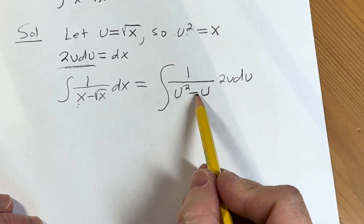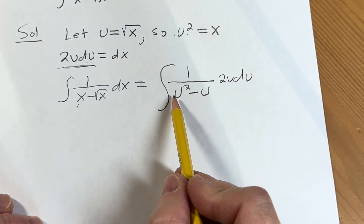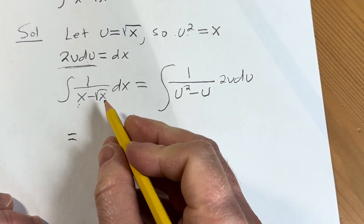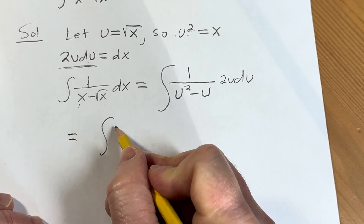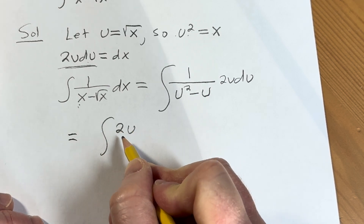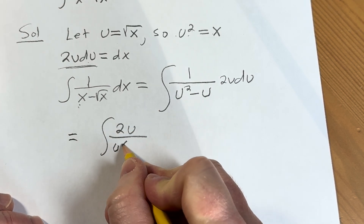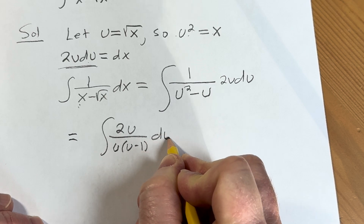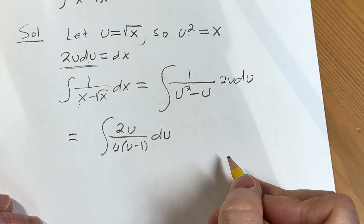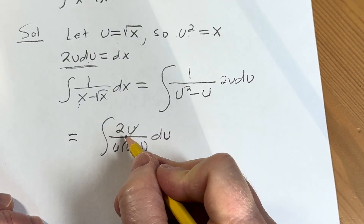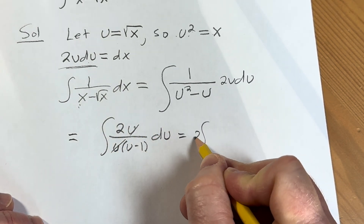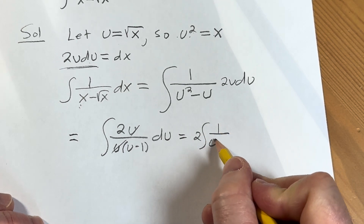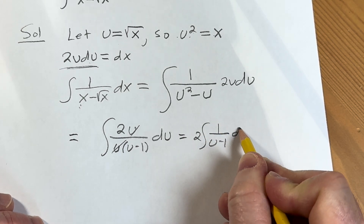Now you can see that we can factor out a u from the denominator, so this will be equal to the integral of 2u over u times (u minus 1) du. We cancel the u, so this is equal to 2 times the integral of 1 over (u minus 1) du, pulling out that 2.